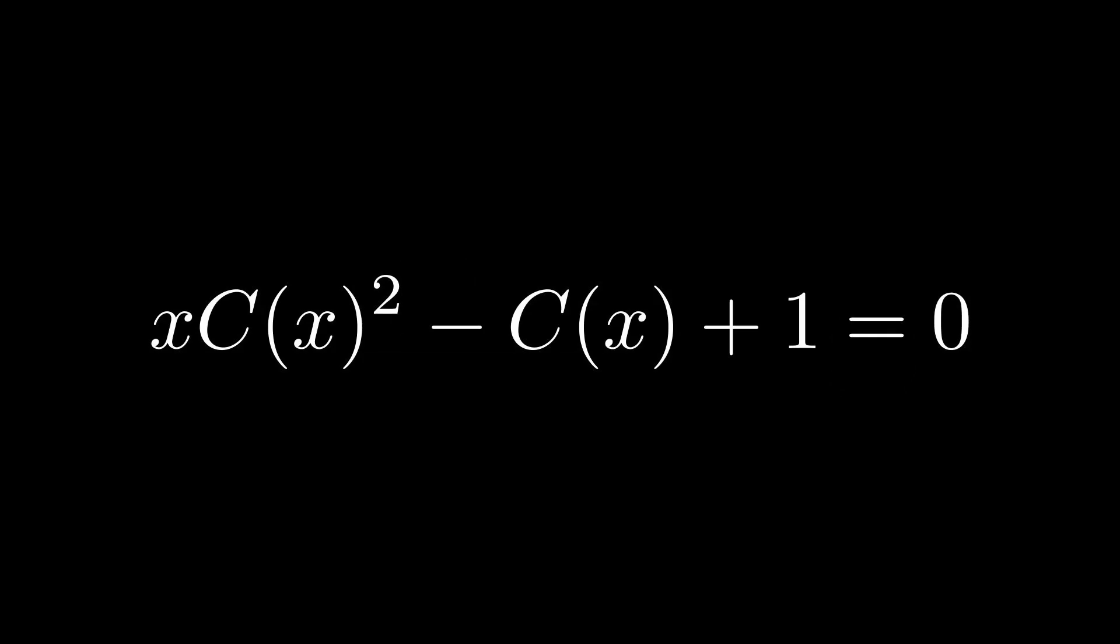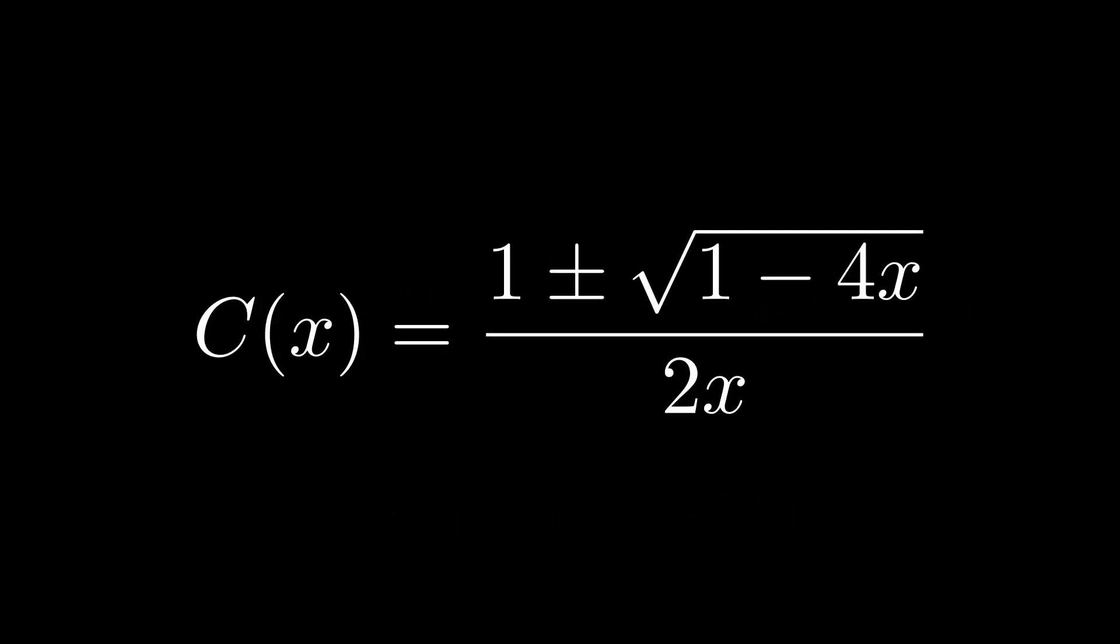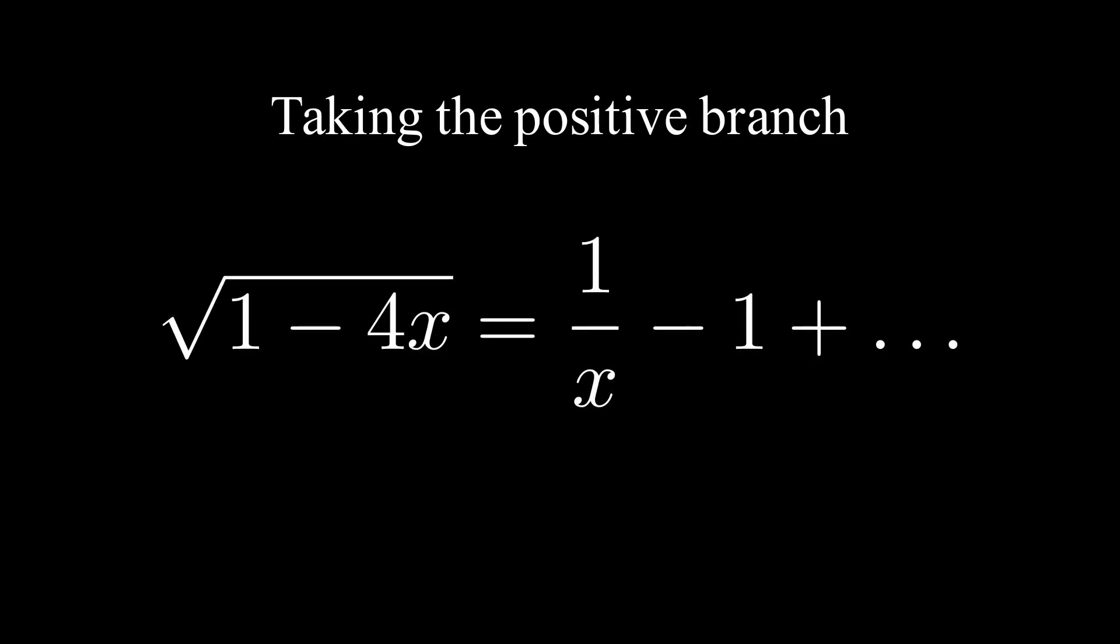Now, by regarding c of x as a variable of its own, we can solve this quadratic for values of c of x, which depend on x. And this gives us the following two solutions. We've got now to determine the correct sign. We'll start by taking the positive branch of the square root. Observe that using the generalized binomial theorem, we can expand the square root of 1 minus 4x as follows.